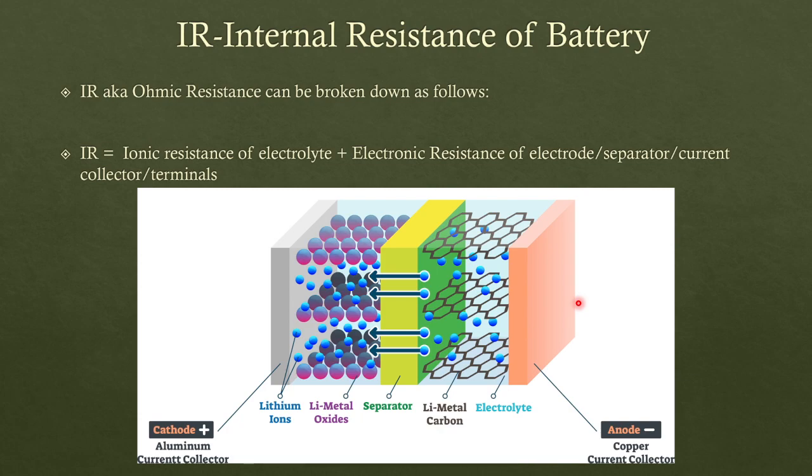If we talk about internal resistance or ohmic losses in more detail, it can be further broken down into various components. So IR equals ionic resistance of electrolyte plus electronic resistance of electrode, separator, current collector, and terminals. To understand this, let's look at a typical schematic of a lithium-ion battery. So you can see starting from the left we have current collector for cathode, so this is cathode, this is anode. Anode typically is some form of carbon, generally graphite.